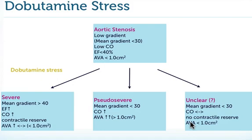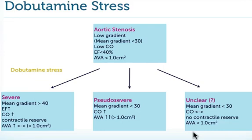If the patient does not have contractile reserve, it can be very difficult to determine the severity of aortic stenosis. The mean gradient will not change very much, cardiac output will probably stay low, and the valve area will stay below one square centimeter. In my experience, these patients should be considered for percutaneous transcatheter valve replacement, because recent studies show that even patients without contractile reserve can improve their ventricular function after valve replacement. With conventional surgery, they have a very high operative risk, so these patients might be candidates for the new percutaneous techniques.